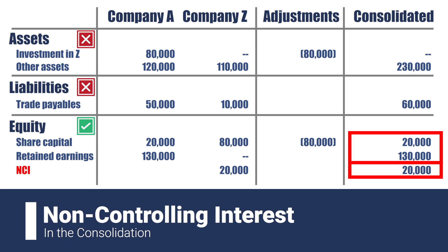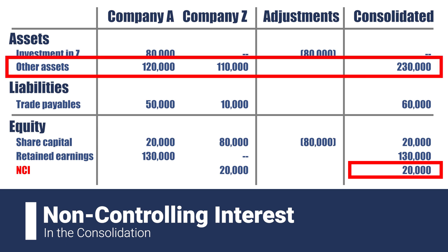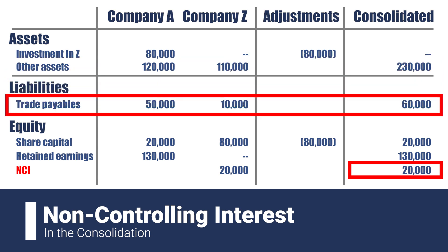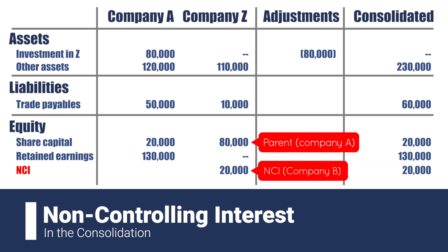The NCI appears as an equity item exactly because of how consolidations work. No matter how much ownership there is of a subsidiary, we always use 100% of the subsidiary's assets and liabilities, and they are never prorated in the consolidation. This prorating actually happens in the subsidiary's equity section when we split the equity into those pertaining to the parent and those pertaining to the NCI.